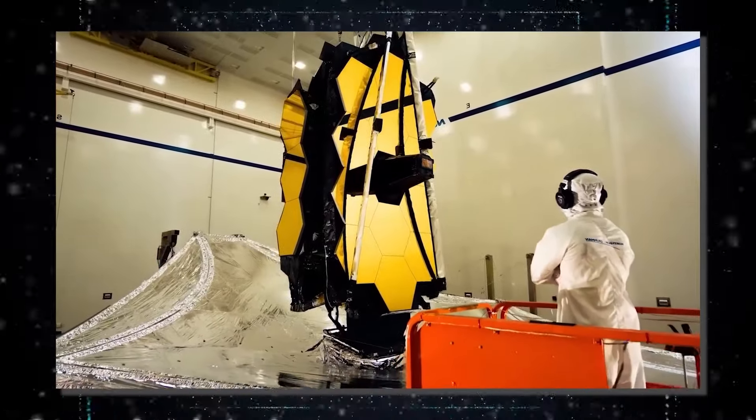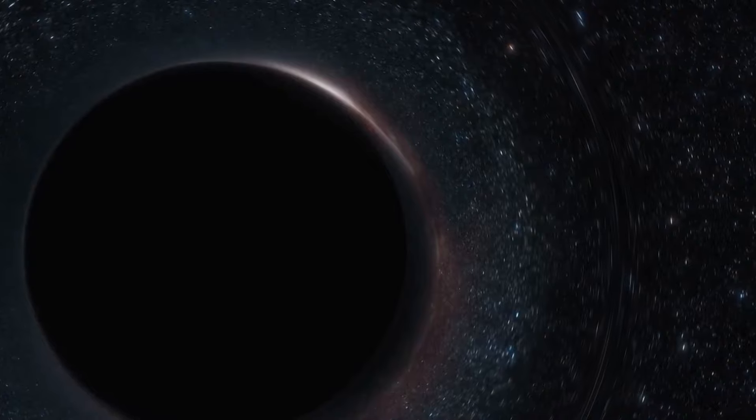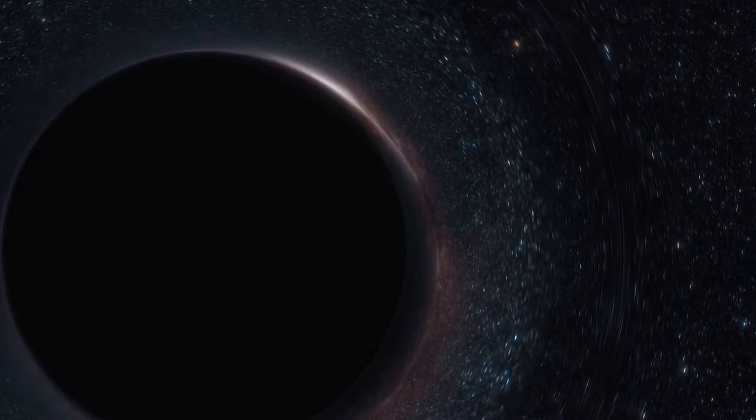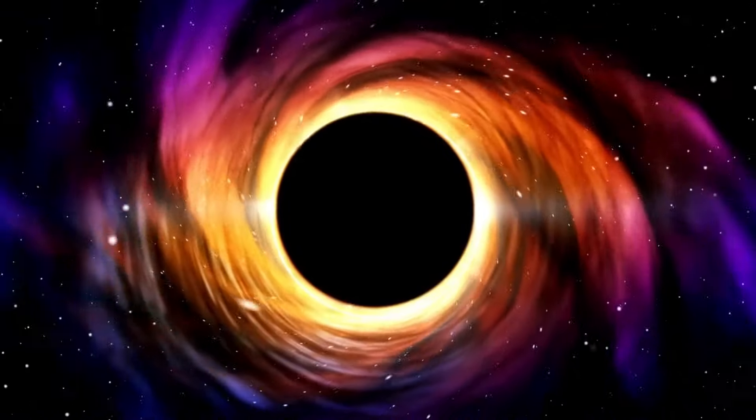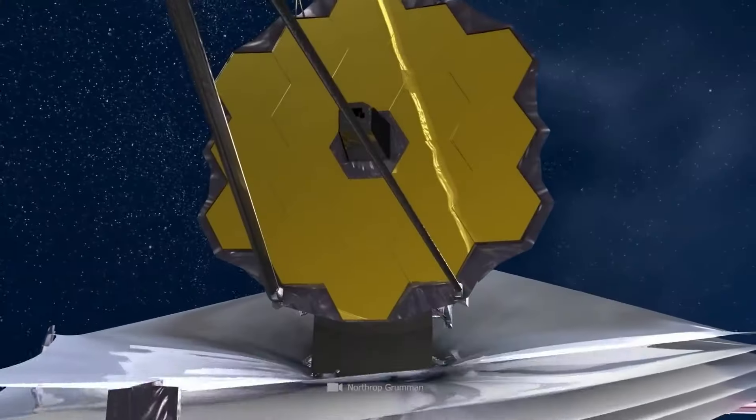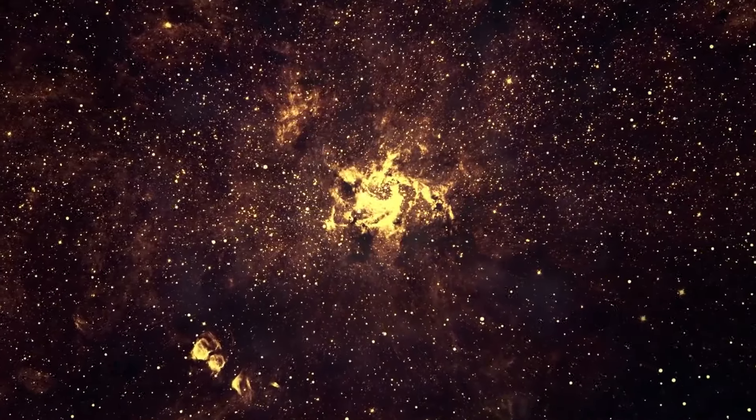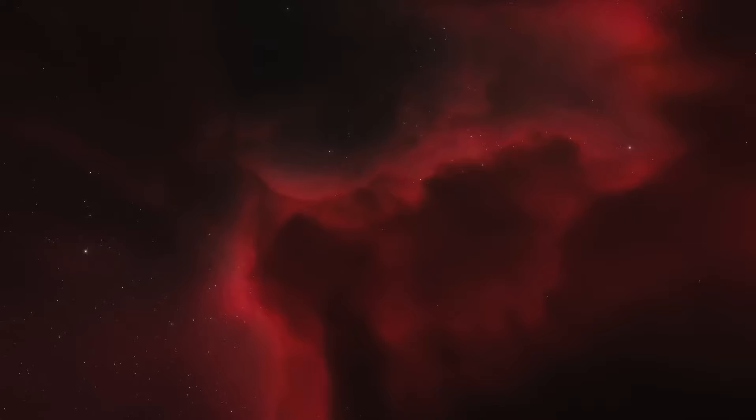Webb used the gravitational lensing effect of a galaxy cluster called MACS J1149.5+2223, located about 5 billion light-years away from us, to boost the signal of the black hole and the galaxy by a factor of 50. This allowed us to capture the image and the spectrum of the black hole and the galaxy with unprecedented clarity and detail.